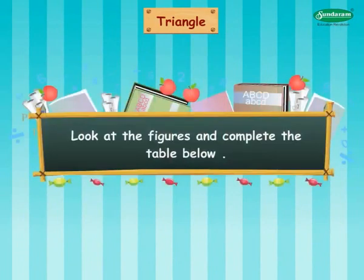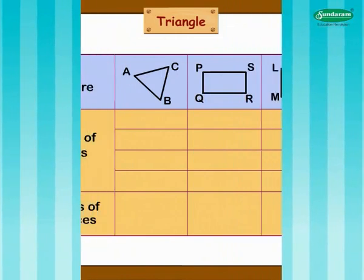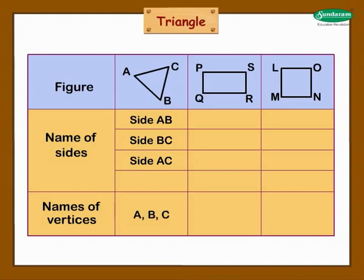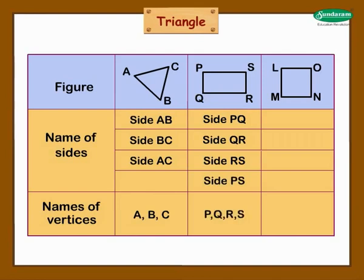Look at the figure and complete the table below. This is triangle ABC. The names of the sides are side AB, side BC, and side AC. The vertices of this triangle are A, B, and C. Now look at the rectangle PQRS. The sides are side PQ, side QR, side RS, and side PS. The vertices are P, Q, R, and S.